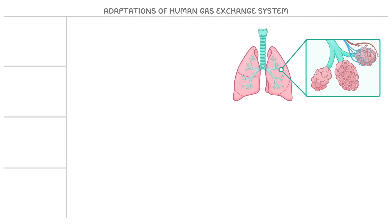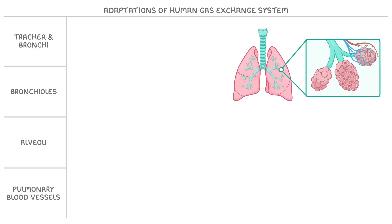Next, we're going to take a look at the adaptations of the human gas exchange system. We'll see how the trachea and bronchi, bronchioles, alveoli, and pulmonary blood vessels are all adapted to their functions.